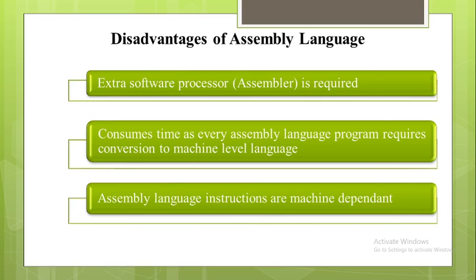An extra software processor, that is the assembler, is required to convert the assembly language program into machine language. The assembly language program is not directly understandable by the computer, so the assembler is required. The second disadvantage is that every assembly program needs to be converted into machine language before execution.